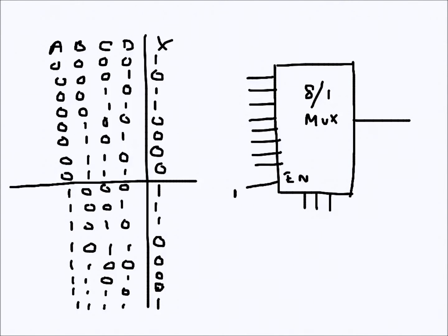A, B, C, D — A is the most significant bit. I will apply B, C, D to the select pins, so S2 is connected to B, S1 to C, and D is the least significant bit connected to S0. I will then connect A or A-bar into the data inputs according to whichever is applicable.